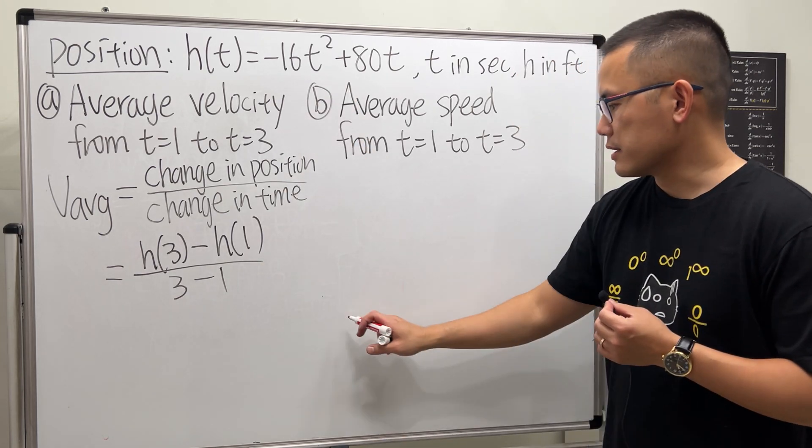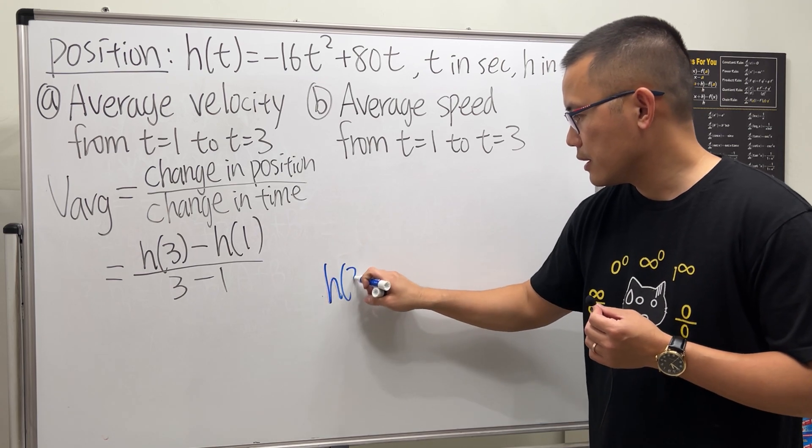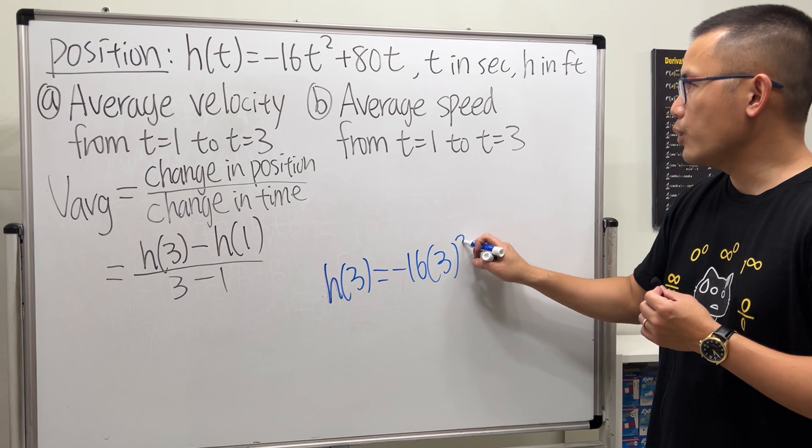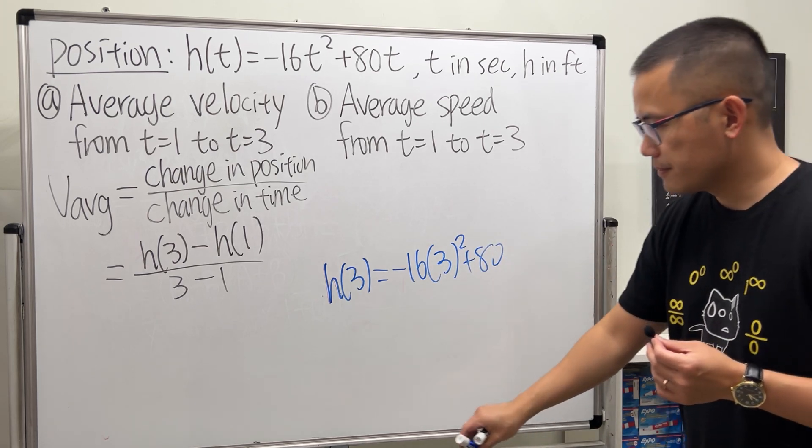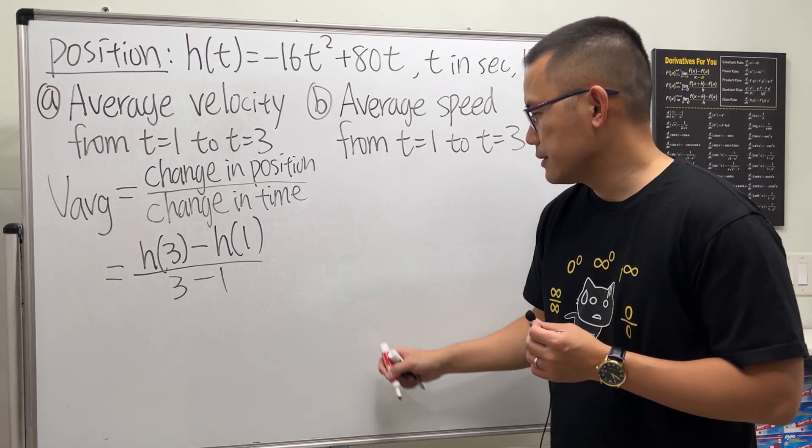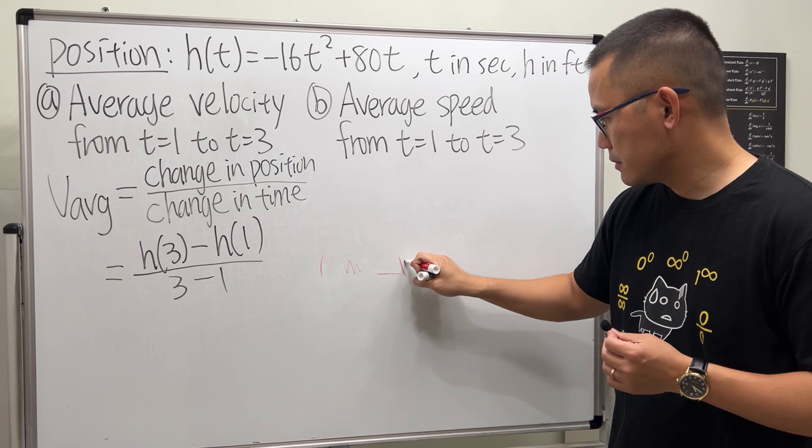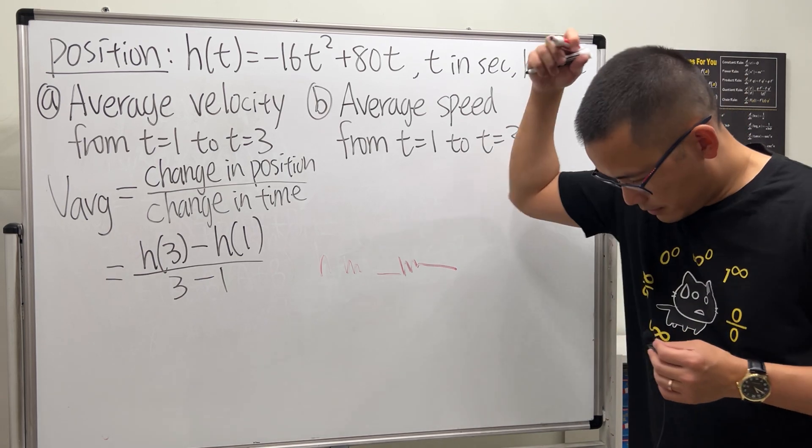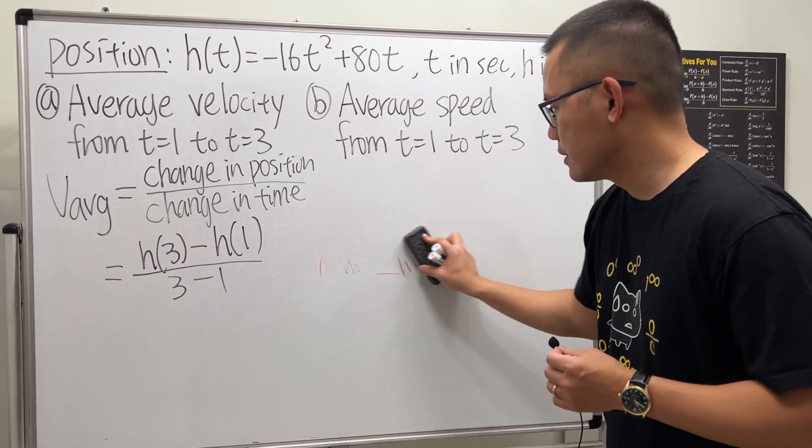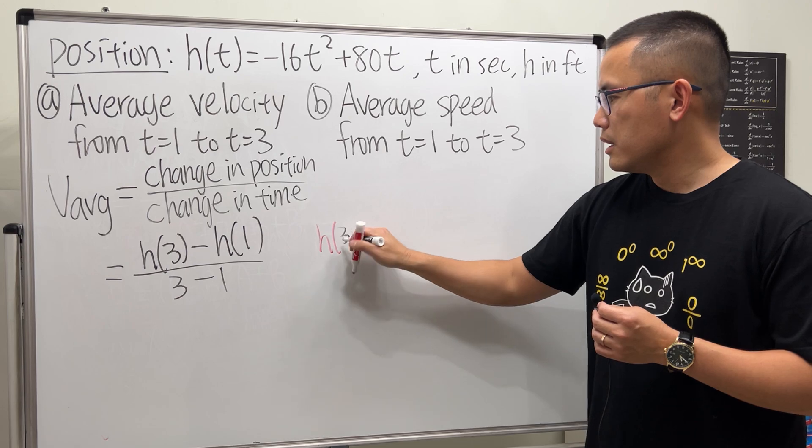Now let's just do a computation real quick on the side. h(3) equals—you put 3 into all the t's—so negative 16 times 3 squared plus 80 times 3. h(3), this is the time.